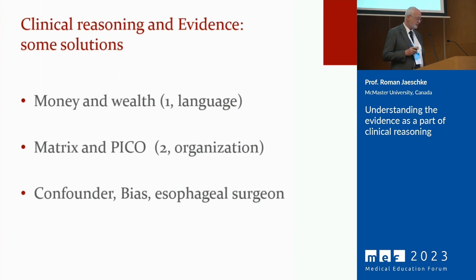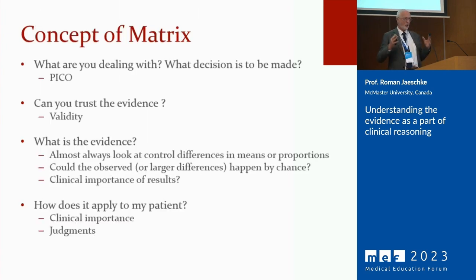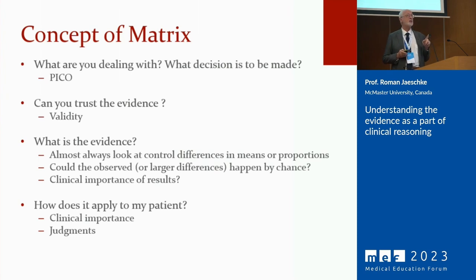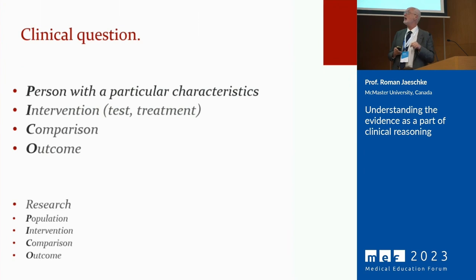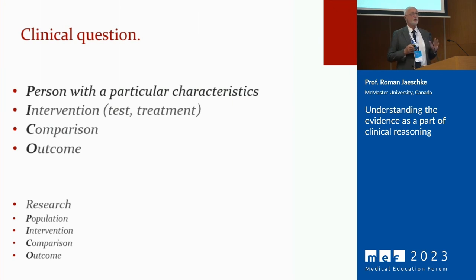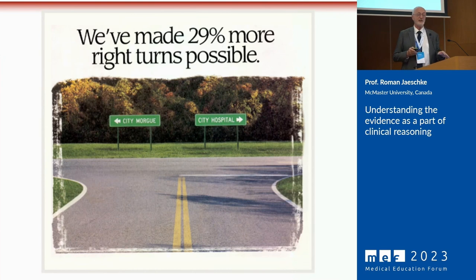The third thing I'd like to share is the matrix. I try to force any clinical or research discussion into addressing four issues: what we are dealing with, can we trust the evidence, what is the evidence, and how does it apply to my patient? Usually when we disagree, it's because we have different questions in mind. The question is defined by person/population, intervention — test or treatment — comparator, and outcome. Each of these can be subject to manipulation or misunderstanding.